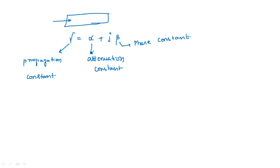Alpha is the attenuation constant and beta is the phase constant. We are going to calculate the amount of attenuation that generally occurs in microwave communications. Beta is a separate study where we measure the phase shift - if phase is not changed between input and output that is okay, but if it changes we need to calculate the amount of phase shift.